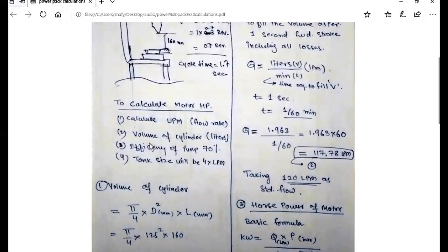So flow rate or liters per minute we will calculate by first calculating the volume of the cylinder. Volume of the cylinder is pi r squared h, or we have the diameter here, so pi by 4 d squared into length or h. We have all units in mm here.